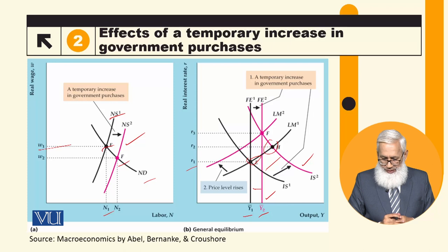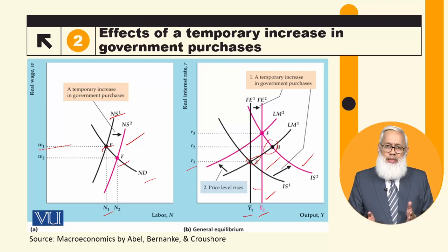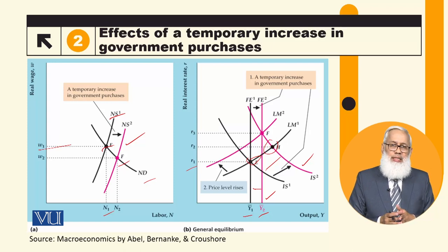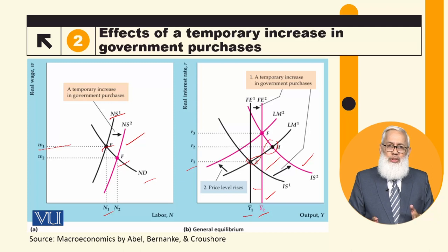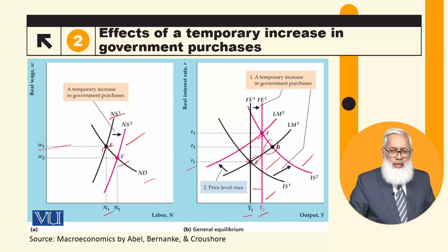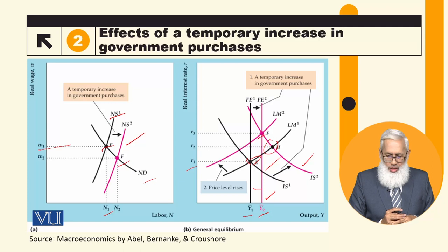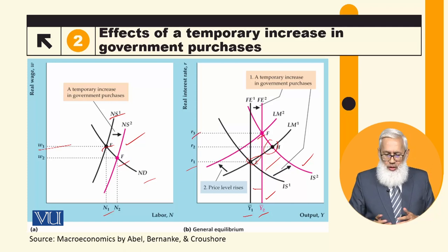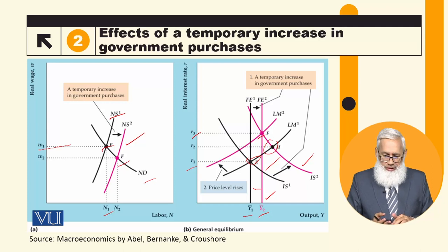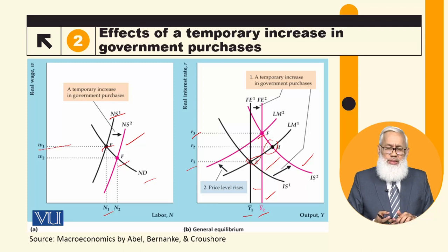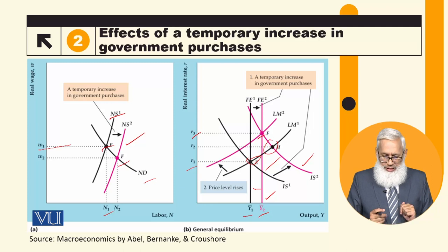At point h, demand exceeds the full employment level of output. Since demand is above full employment, prices will adjust. The classical view is that prices adjust quickly. Since demand exceeds full employment output, prices rise. When prices rise, the LM curve shifts leftward, and finally the economy returns to equilibrium at the new point e. At this new equilibrium: output level has increased, real interest rate rose from r1 to r3, and the LM curve shifted because the price level increased. In summary, the effect of a temporary increase in government purchases results in: real wage falls, employment increases, output increases, real interest rate increases, and price level increases.